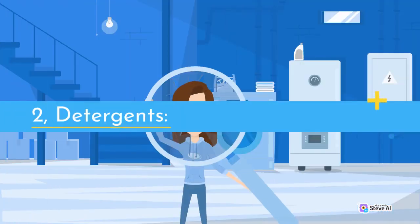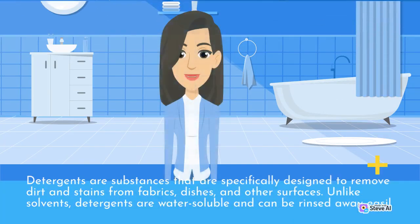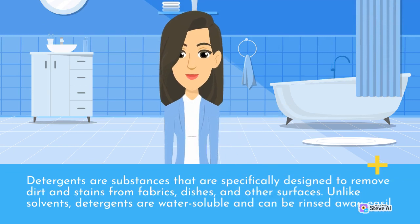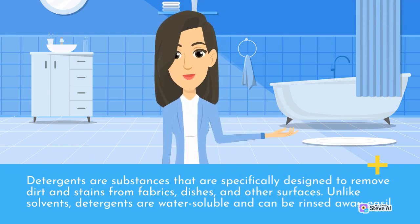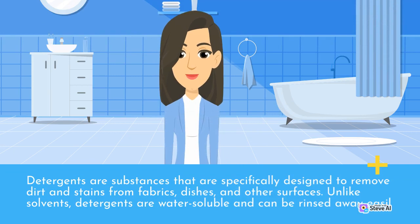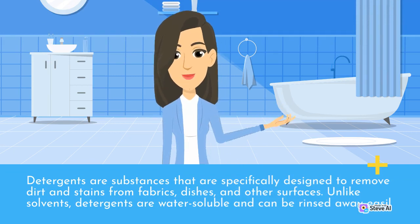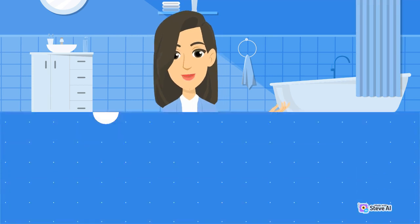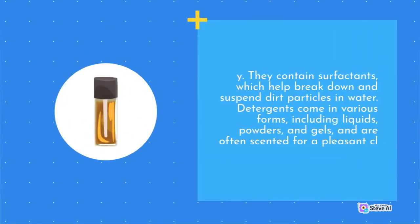2. Detergents. Detergents are substances that are specifically designed to remove dirt and stains from fabrics, dishes, and other surfaces. Unlike solvents, detergents are water-soluble and can be rinsed away easily. They contain surfactants, which help break down and suspend dirt particles in water.